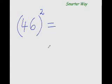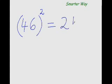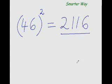Let's take one more example of a number less than 50. As you can see, 46 is 4 less than 50. So immediately subtract that 4 from 25: 25 minus 4 is 21, and the square of 4 is 16. So 2116 — that is your answer.